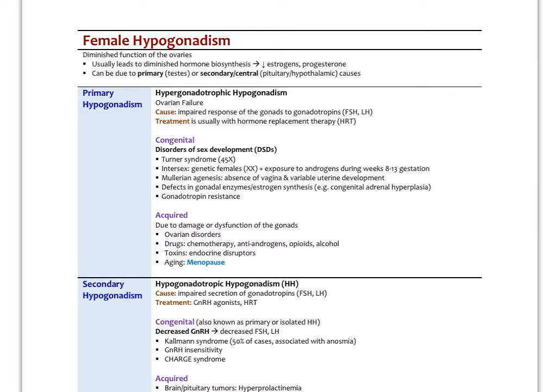Female hypogonadism refers to diminished function of the ovaries, leading to diminished hormone biosynthesis with low estrogens and progesterone, and typically abnormal follicular development with anovulation. This can be due to primary ovarian causes or secondary causes involving the pituitary or hypothalamus. Primary hypogonadism is ovarian failure, also referred to as hypergonadotropic hypogonadism, caused by impaired response of the gonads to gonadotropins FSH and LH. Treatment is typically hormone replacement therapy.